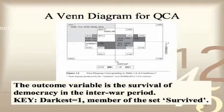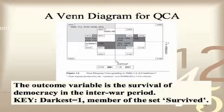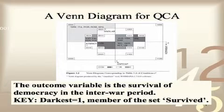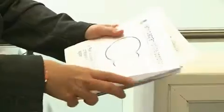For each country, either democracy did survive or it didn't survive. There were two instances where it did survive, and in the diagram we're actually illustrating crisp sets, because they either had yes or no on a series of four conditions and also on the outcome. So this is called crisp set QCA, and it's illustrated here.